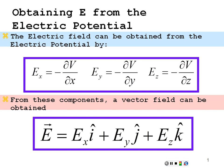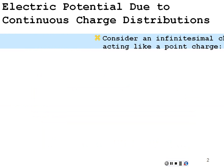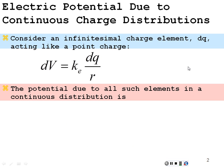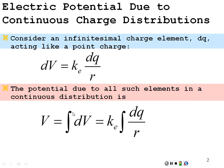We want to put this to use on a continuous charge distribution. Say we had an infinitesimal charge element dq acting like a point charge, and hence its potential would be k dq over r, just like a point charge of value dq. The potential due to all such elements, if we integrate them all together, would be k times the integration of dq over r for our continuous charge distribution.